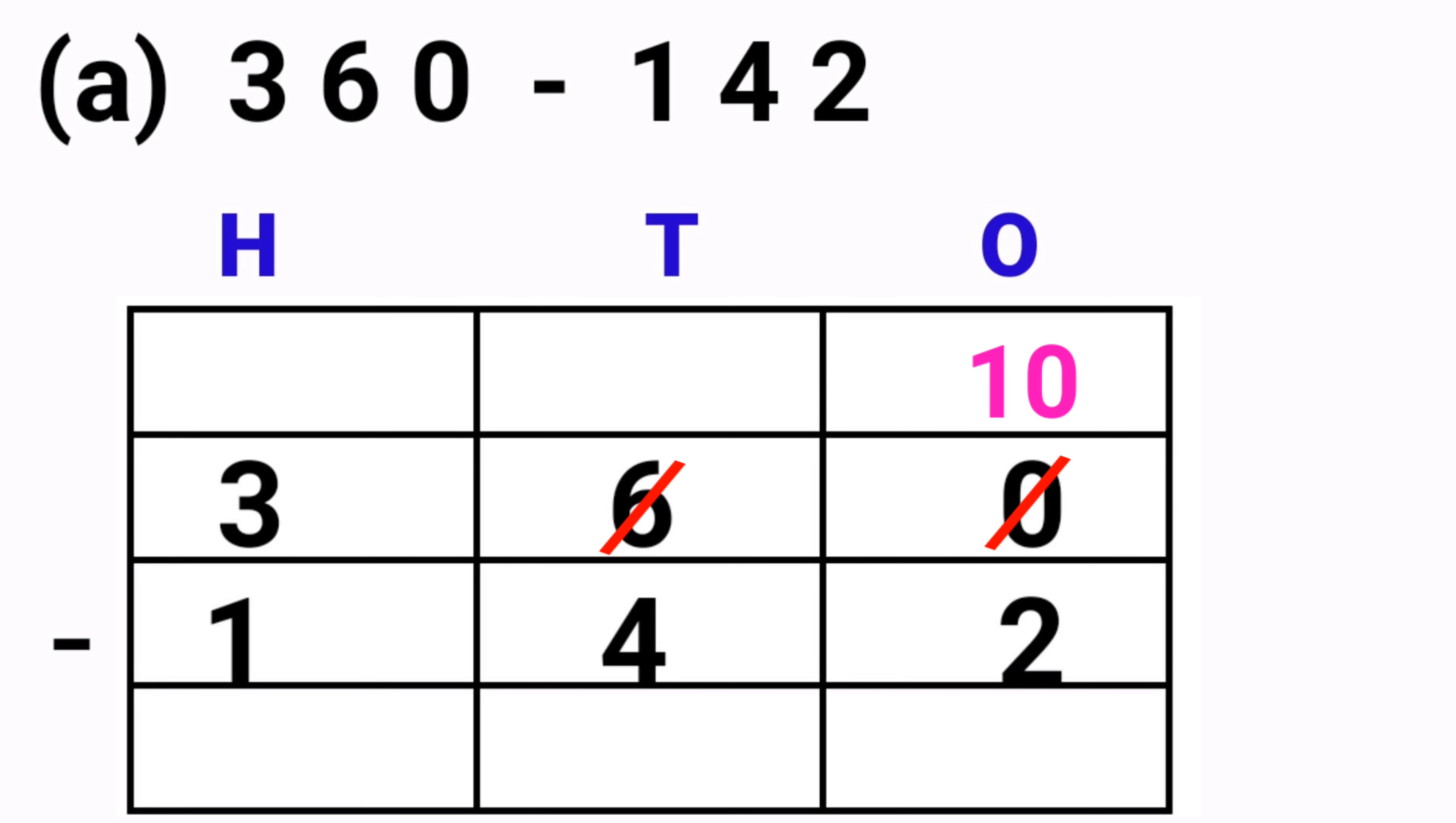So 2 after 3, 4, 5, 6, 7, 8, 9, 10. So 10 minus 2 is equal to 8. Now let us see the tens place.